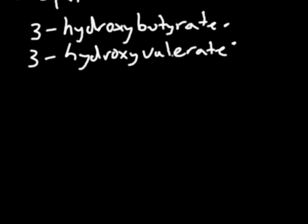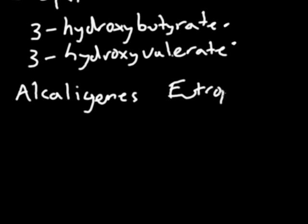They're naturally produced by bacteria. One of the bacteria that they naturally occur in is called Alcaligenes Eutrophus. So Alcaligenes Eutrophus, that bacteria is capable of producing it.